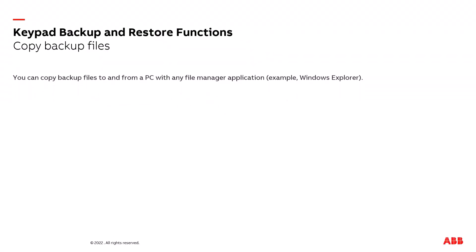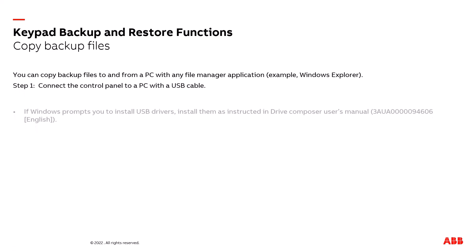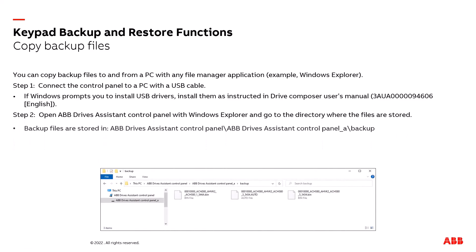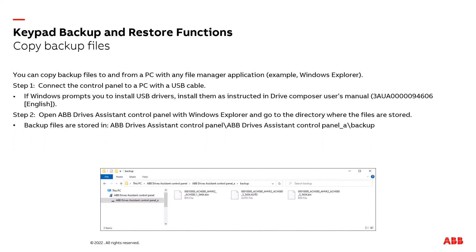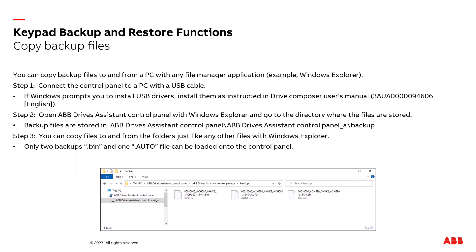Let's review copying backup files. You can copy backup files from any PC with any file manager application, such as Windows Explorer. Step one: connect the control panel to a PC with a USB cable. If Windows prompts you to install a USB driver, install as instructed in the Drive Composer user manual. Step two: open ABB Drives Assistant Control Panel with Windows Explorer and go to the directory where the files are stored. Backup files are stored in the ABB Drive Assistant Control Panel underscore A backup folder. You can copy these files just as any other file in Windows Explorer. Only two backup .bin files and one .auto file can be loaded onto a control panel.